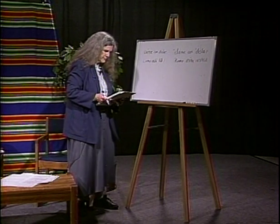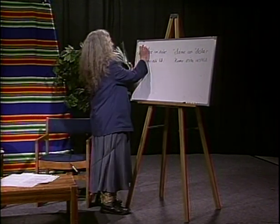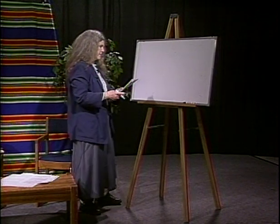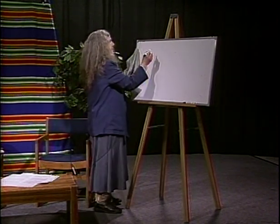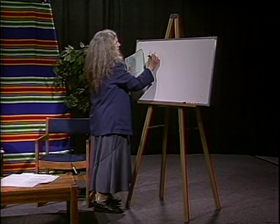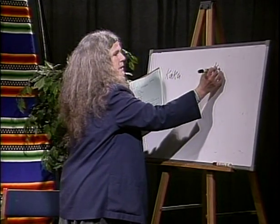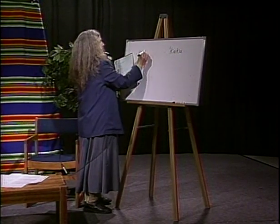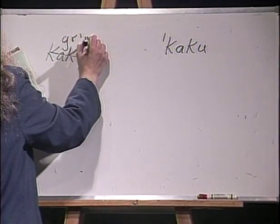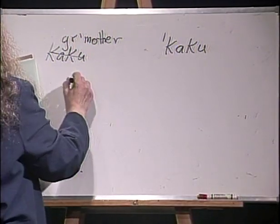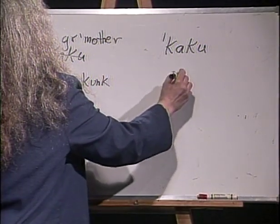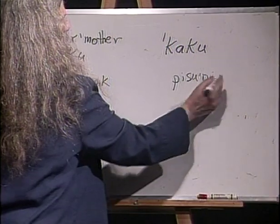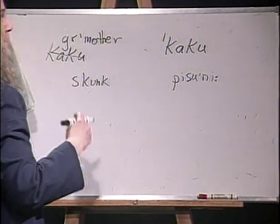Let's take a couple of examples from Comanche — get to Oklahoma Indian languages now, our favorite languages on this show. In Comanche, a number of letters are used just as in IPA. Grandmother is written in their orthography as kaku — K-A-K-U, kaku. Skunk is pronounced pisuni — pisu, accented, ni. In IPA we put a little colon here, meaning you draw out that last vowel; I with a colon is pronounced 'ee' drawn out, as opposed to short 'ee'. So this is pisuni.